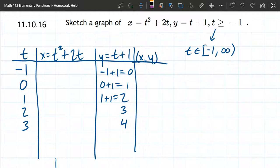t is 0, 0 plus 1 is 1, t is 1, 1 plus 1 is 2. When t is 2, 2 plus 1 is 3, when t is 3, 3 plus 1 is 4.